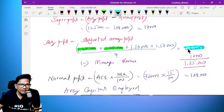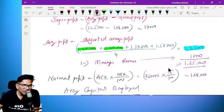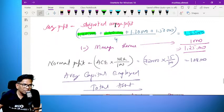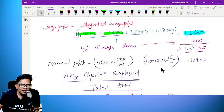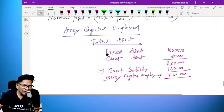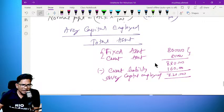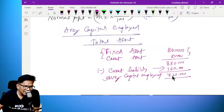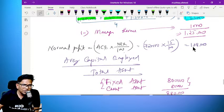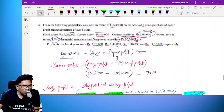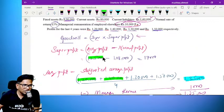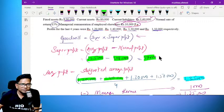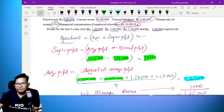We got 1,35,000 minus managerial remuneration 10,000, so 1,25,000 average profit minus normal rate of return. Normal rate of return is average capital employed into NRR divided by 100. Average capital is total asset: fixed asset plus current asset minus current liability 1,60,000 equals 7,20,000. 7,20,000 times 15% equals 1,08,000.